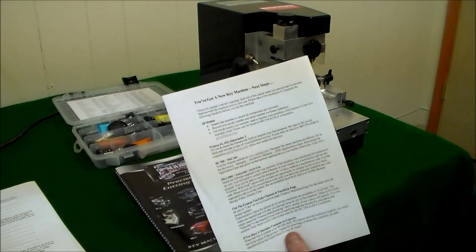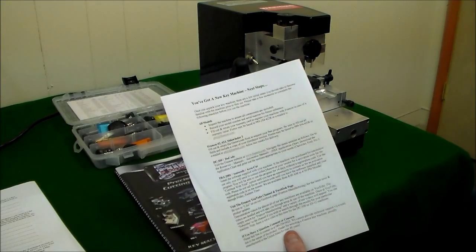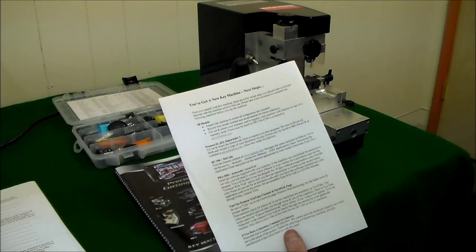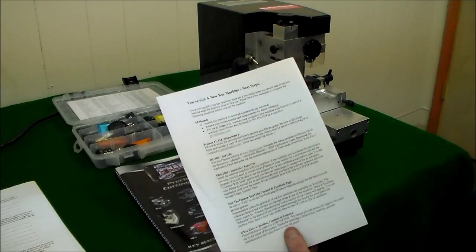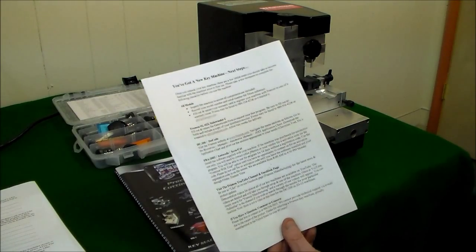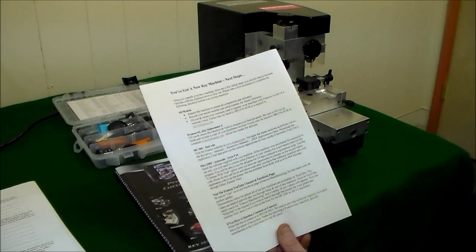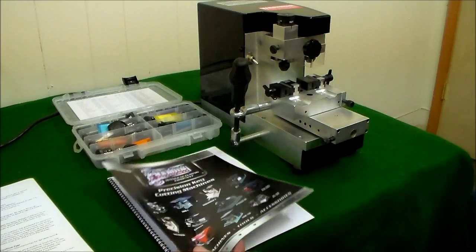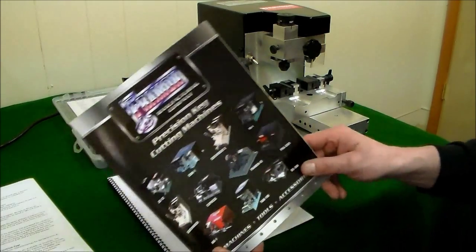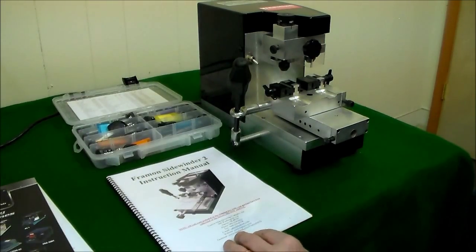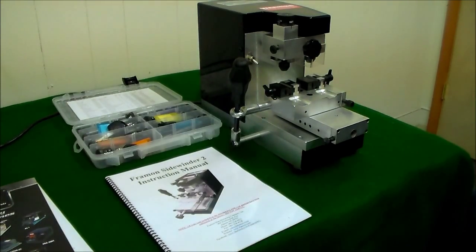Usually there's also a paper in with the machine that talks to you about your next steps once you buy one of our key machines. It talks about registering it, what I just mentioned about the generic code form, and talks about our website, YouTube channel, and Facebook page. Obviously if you're here, you've found our YouTube channel. The catalog comes along with the machine as well. All of our different key machines and tools are included in that. And last but not least, the instruction manual, which we'll get into here in a few minutes.